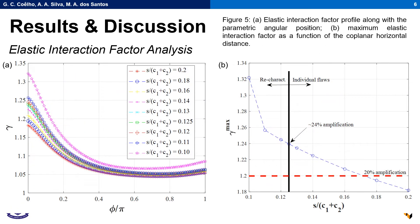Regarding the elastic interaction factor, the maximum amplification was observed at the interaction crack tip. At this parametric location, a 24% amplification was noticed at the interaction criterion distance recommended by fitness for service standards, which indicates inconsistency with the 10% amplification prerogative stated on those standards.